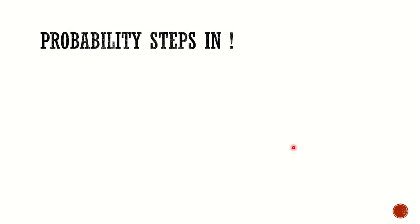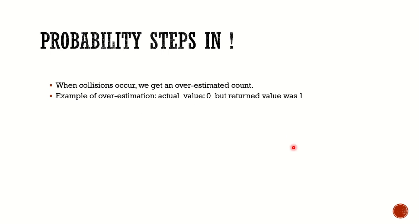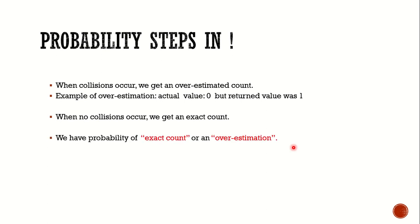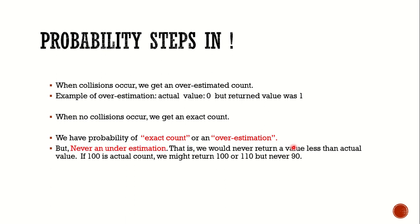Actually this is not a bug but a known property. When a collision occurs, as in the last example, we get an overestimated count. In our example, the actual count was 0 but the returned value was 1. When there are no collisions, we get an exact count. So the property of Count Min Sketch is: either we get an exact count or we get an overestimation — but never an underestimation. If 100 is the actual count, we might return 100 or 110, but never 90.